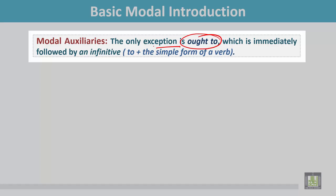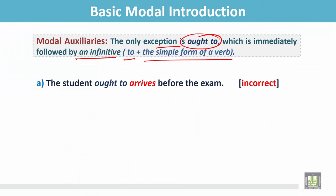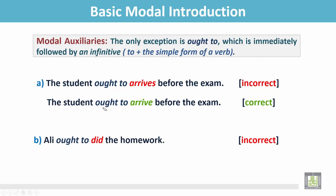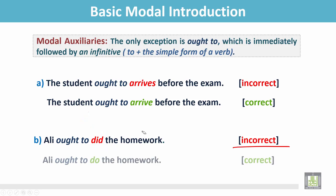The only exception is 'ought to,' which is immediately followed by an infinitive 'to' and the simple form of a verb. For example: 'The student ought to arrives before the exam' is incorrect because the verb has a final S. The correct sentence is 'The student ought to arrive before the exam.' Another example: 'Ali ought to did the homework' is incorrect because the verb is in the past form after 'to.' The correct one is 'Ali ought to do the homework' — after 'to,' the verb should be in the simple form.